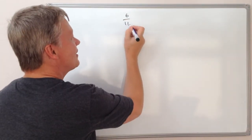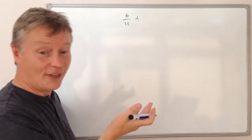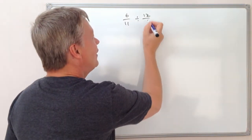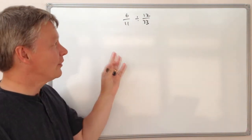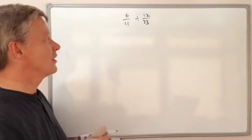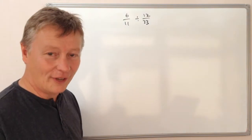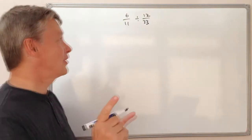Let's say we've got something like 6 elevenths and that's going to be divided by 12 33s. So when we're dividing fractions one of the tricks that we use is we actually flip it the other way around and we multiply it. Let me show you what I mean.